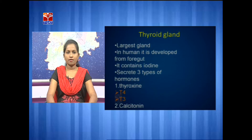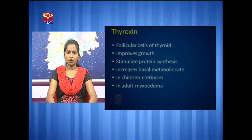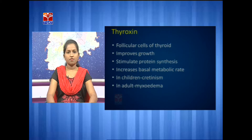The thyroid gland secretes two types of hormones: thyroxin and calcitonin. Thyroxin is secreted by the follicular cells of the thyroid gland, and it improves growth, stimulates protein synthesis, and increases the basal metabolic rate. Due to the deficiency of thyroxin in children, cretinism occurs, and in adults, myxoedema occurs.